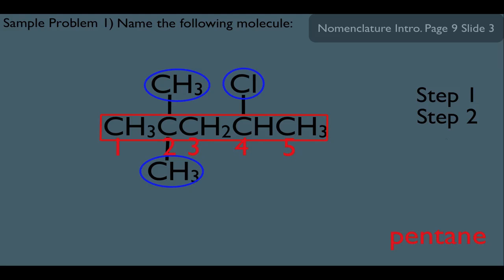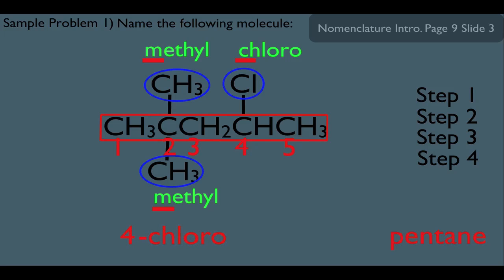Which brings us to step three here. Let's label our substituents. Notice we got a methyl, we got the chloro, and we got the methyl down here. We're now ready for step four. Let's place this all together. So let's create the name here, and remember we have to put the substituents in alphabetical order, and notice C comes before M in methyl, so therefore we're going to list the chloro first, so that gives us 4-chloro, and then 2,2-dimethylpentane.